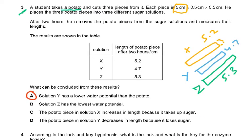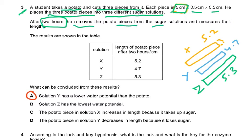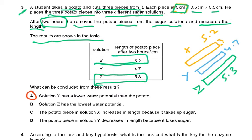Question number 3: a student takes a potato and cuts three pieces, each 5cm × 0.5cm × 0.5cm, and places them into three different sugar solutions. After two hours, he measures their length. X and Z have increased in length, meaning outside there was a higher water potential, so water moved in. The potato absorbed water and became more turgid, resulting in an increase in size.